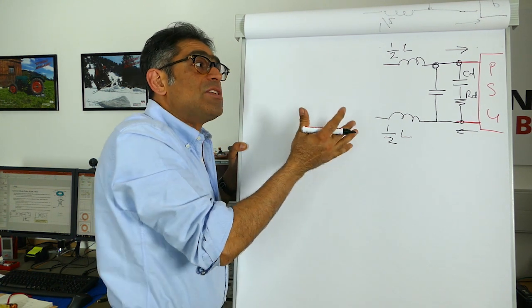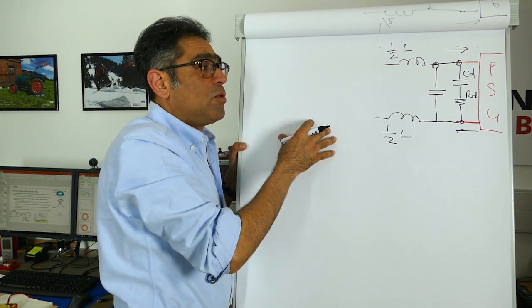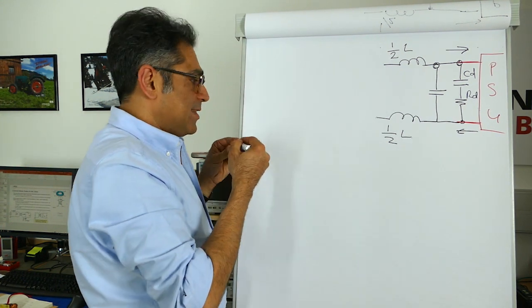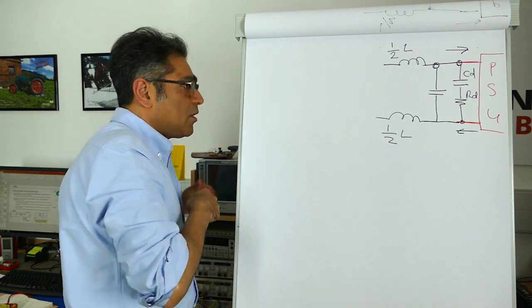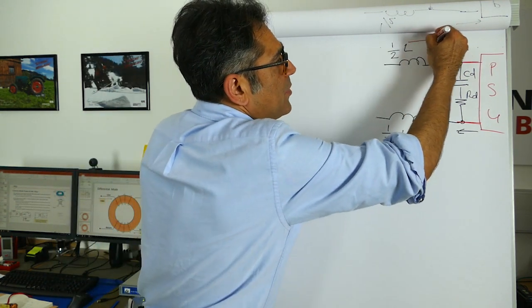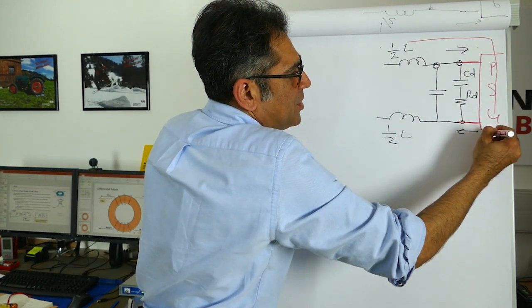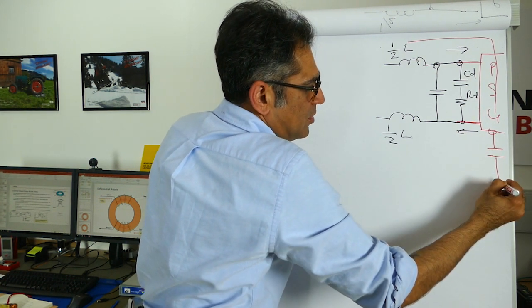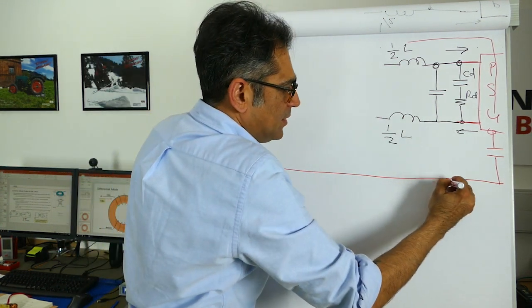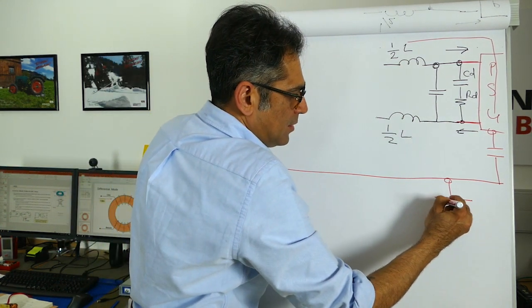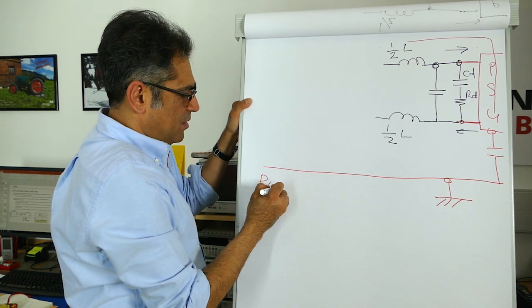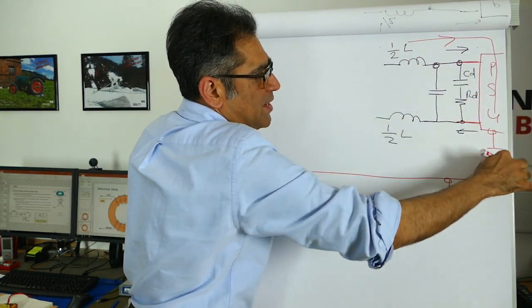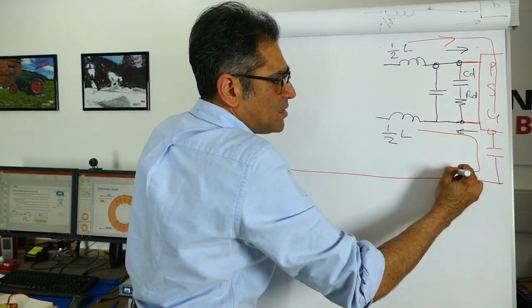Now as we discussed in the previous video, we also have some common mode noise and common mode currents. We said that the common mode currents will flow this way and then return through parasitic capacitances to the chassis, to protective earth. This is our third line, so I've got some current going that way now through here and I've got some current going that way.